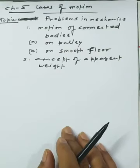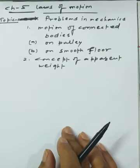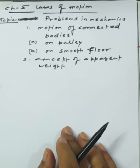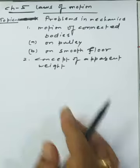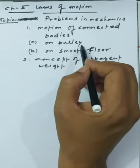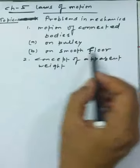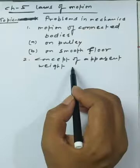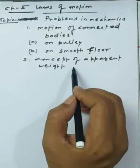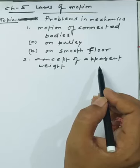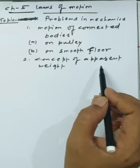Chapter 5 - Laws of Motion. Today we have the topic: problems in mechanics. We'll cover basic examples in mechanics, including problems based on the concept of motion of connected bodies on a frictionless pulley and smooth floor, as well as the concept of apparent weight and movement of a lift. I'll be solving all problems along with possible derivations.